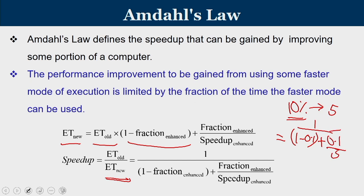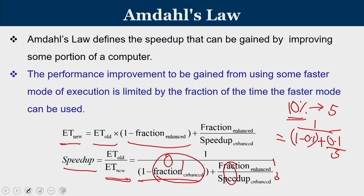For example, if 10% of instructions get a 5x speedup, the overall speedup is 1 / (0.9 + 0.1/5). If 100% of instructions get a 5x speedup, then (1 minus fraction enhanced) becomes 0, and the overall speedup is simply 5. If none of the instructions are benefited, you get no speedup at all. Amdahl's law gives the general insight that the amount of speedup you can get is restricted to the fraction enhanced — this is very important.